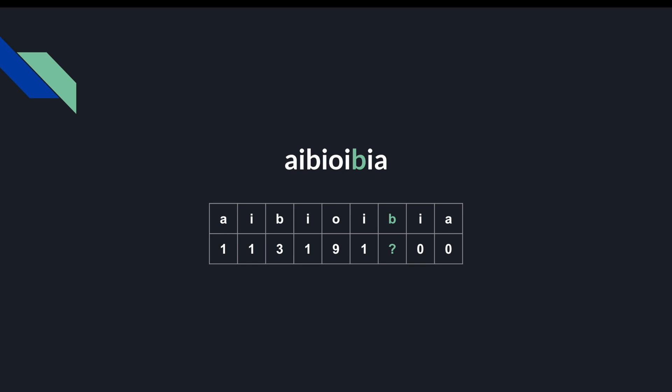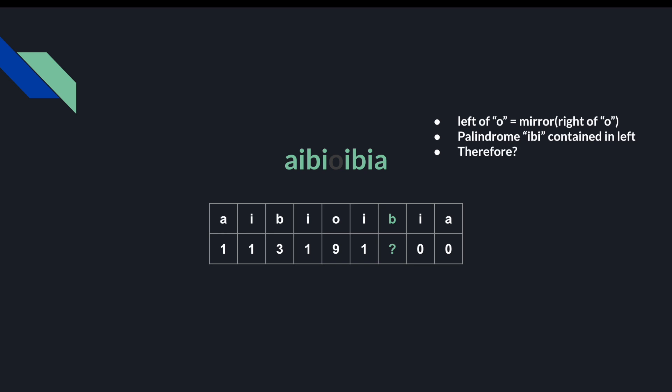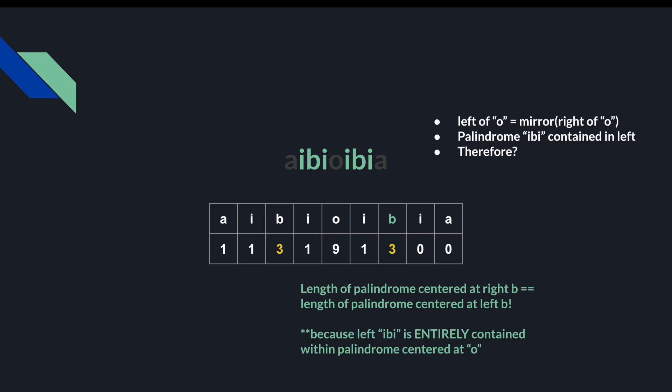Let's skip ahead to this b right here, and fill in the values for all the letters before it. You can verify that the longest palindrome centered at these i's is 1, and the longest palindrome centered at o is 9. So now we ask: what's the longest palindrome centered at this b? Well, we could just do our neighbor checking loop again, but remember the left side of o is a mirror of the right side of o. Since the palindrome ibi is contained in the left side, we can just copy the length of the palindrome centered at b over to the right side. We can do this because the ibi subpalindrome is entirely enclosed within a larger palindrome — if ibi is a palindrome on the left side, it's still going to be a palindrome with the same length when it's mirrored over to the right side. That's the general motivation for Manacher's algorithm, which is the O(n) solution, but there are some finer points than just copying subpalindrome lengths over from left to right.